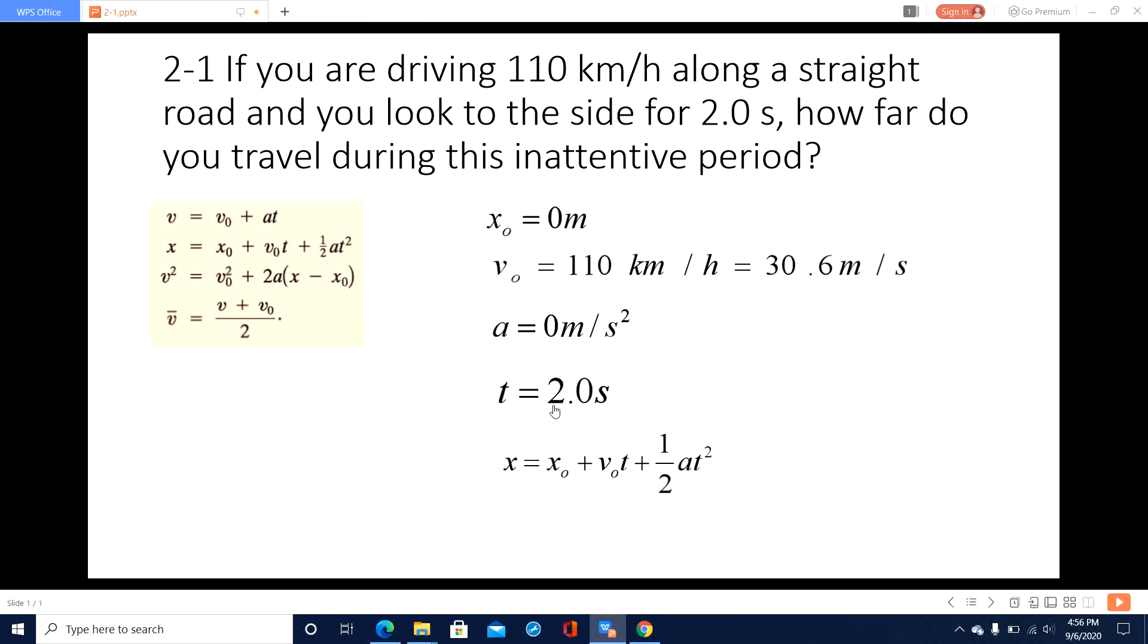So we write down the second equation. We select. And then we just input the known quantities. So this is 0. And then initial velocity, time taking, acceleration is 0. Then we get the final result.